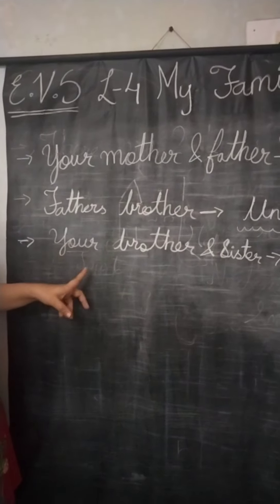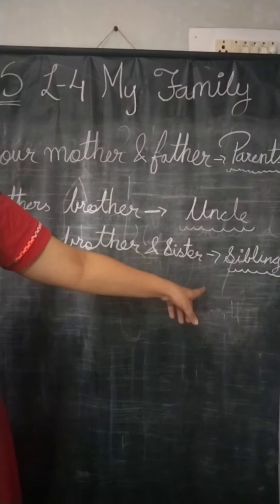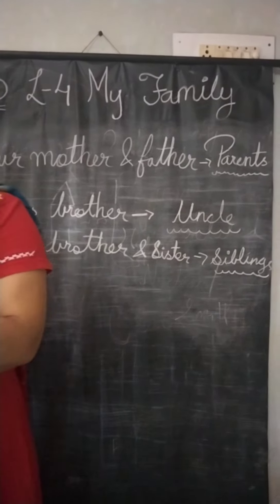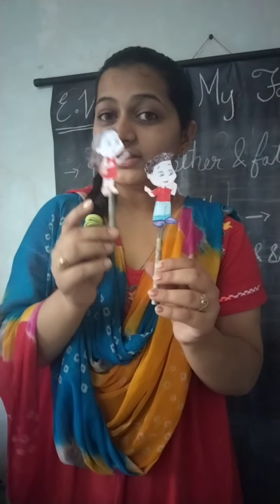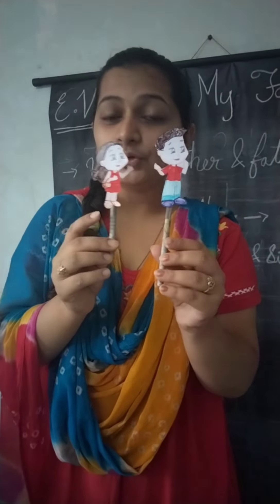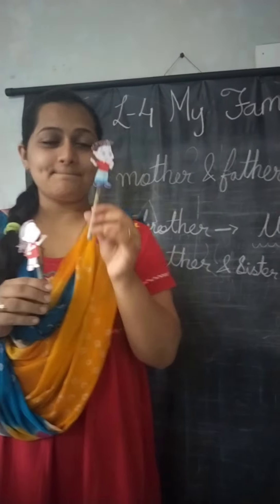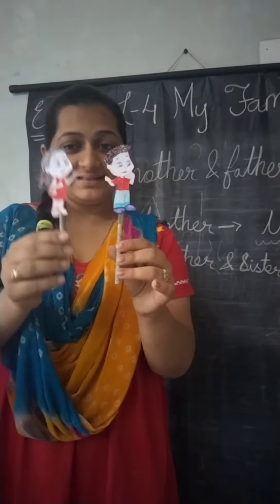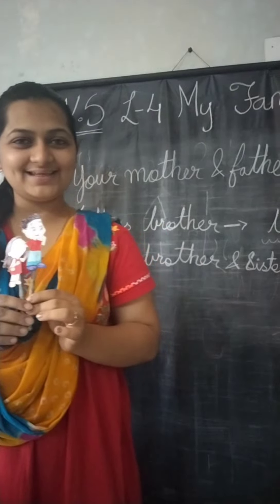Next, your brother and your sister. Toh yeh aap ho, aur yeh aapki didi hai. Toh yeh didi aur aap dhuno kya huye? You both are known as siblings. Kya bolte hai? Siblings. Aap ho aur yeh aapki didi, toh yeh aapke kya huye aap dhuno? Siblings.